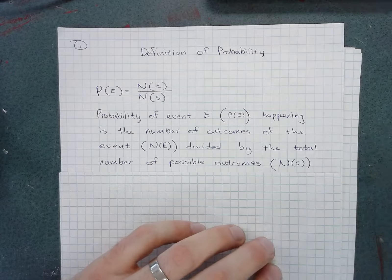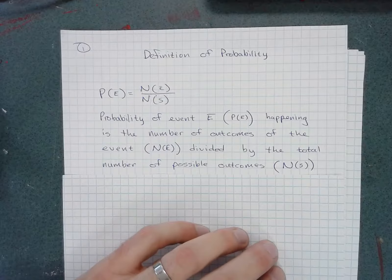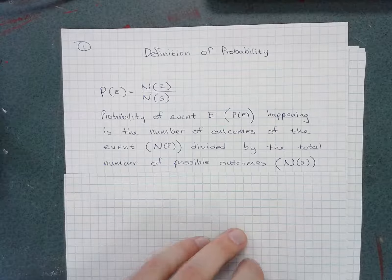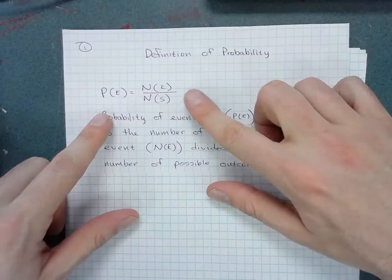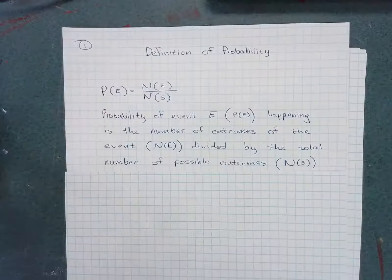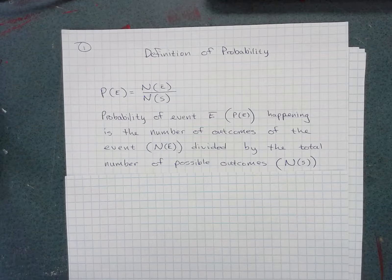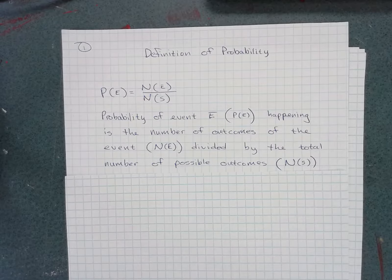Okay, so we're going to go over the basic definition of probability. Probability, in general, is defined as the number of outcomes in an event divided by the number of total possible outcomes.